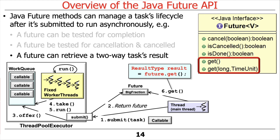There are a couple of different ways to get the results. One variant that takes no parameters will block until the future is finished — until the asynchronous computation is done or a failure occurs. The second variant takes two parameters and will wait for up to a certain amount of time to retrieve the result. If it doesn't get the result back in that amount of time, it will return an error indicating that the future was not able to be redeemed within the time frame.